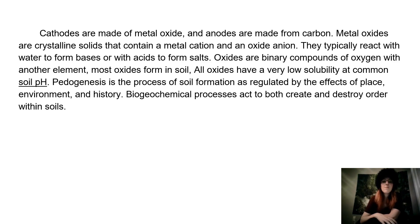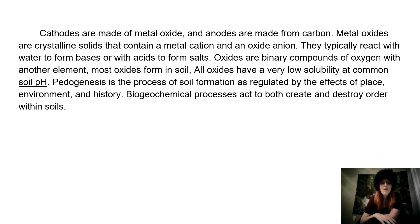Cathodes are made of metal oxide and anodes are made from carbon. Metal oxides are crystalline solids that contain a metal cation and an oxide anion. They typically react with water to form bases or with acids to form salts.